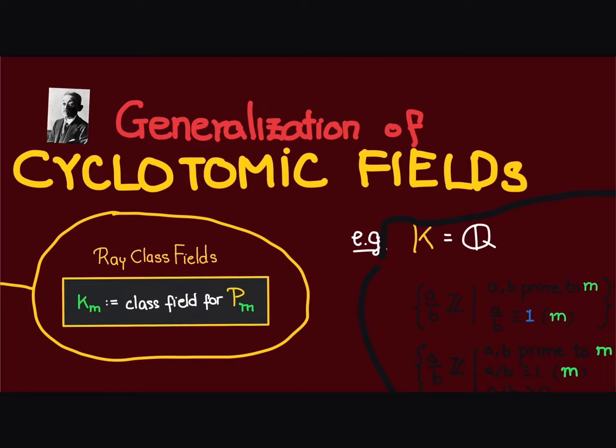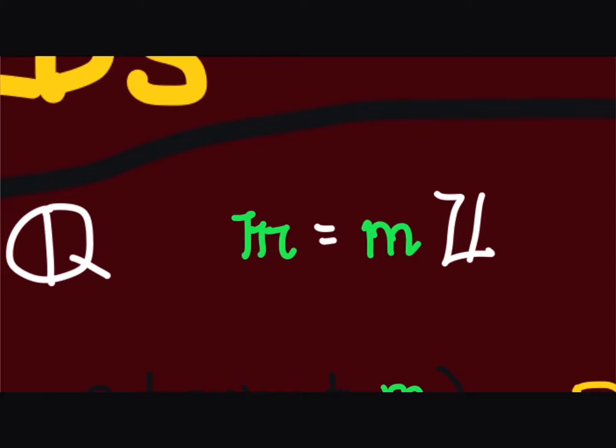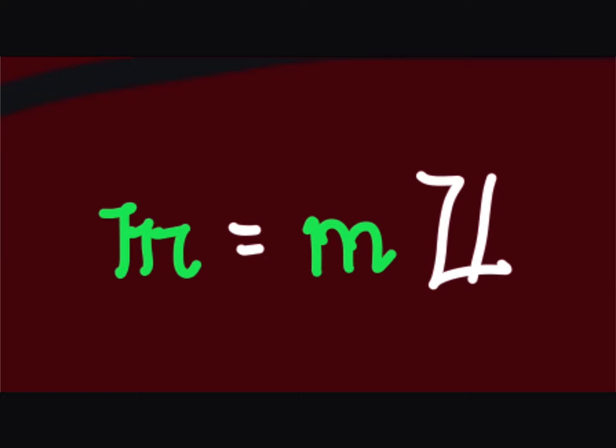Let us see that this is indeed a generalization of cyclotomic fields. Consider the case when our number field k is just Q, and let the modulus m be the ideal generated by the integer m.